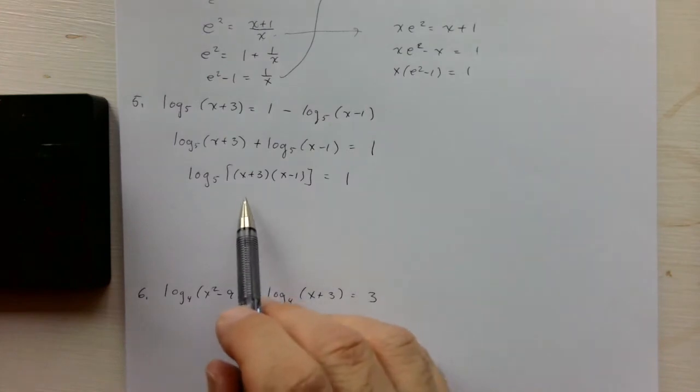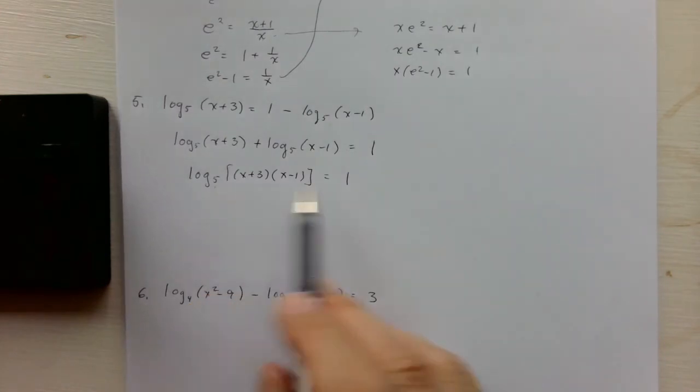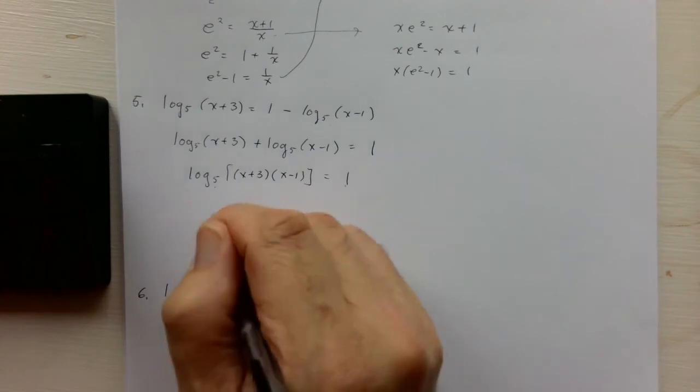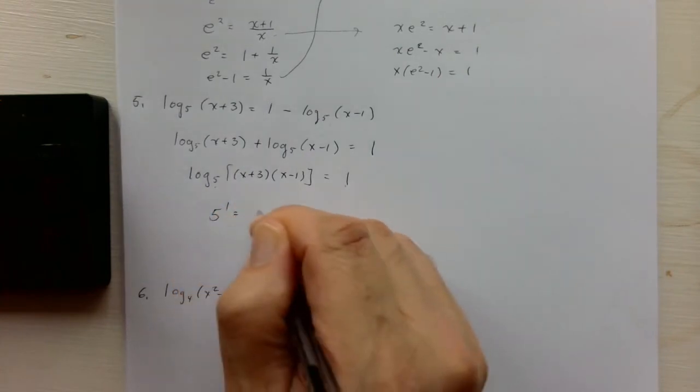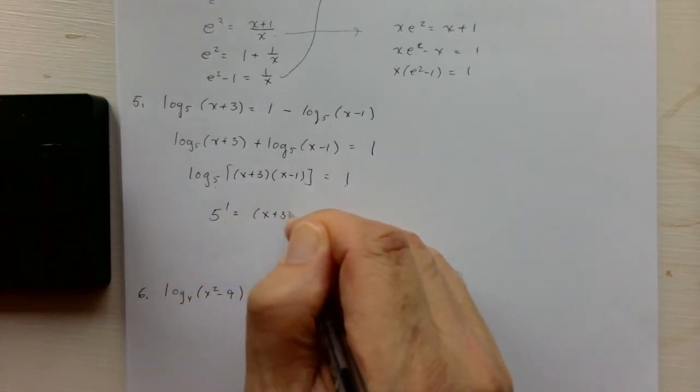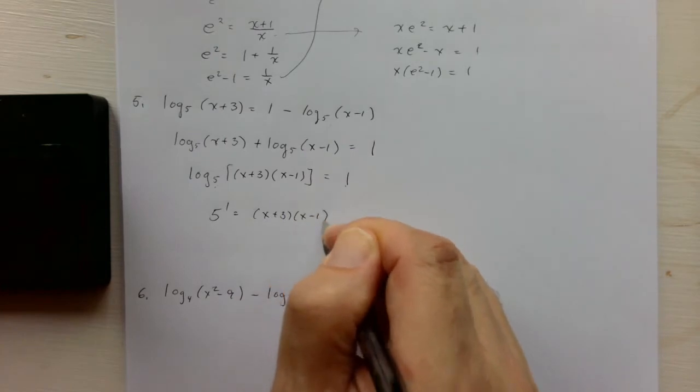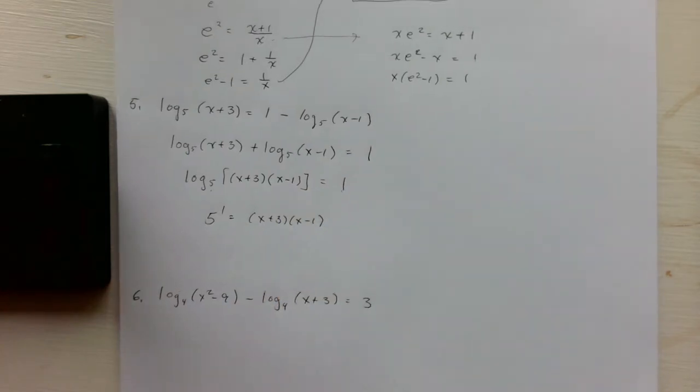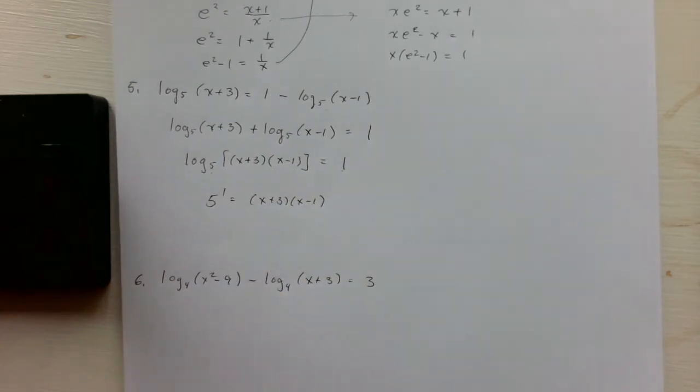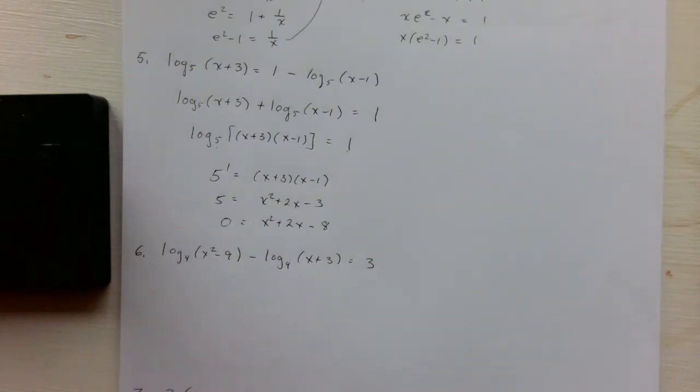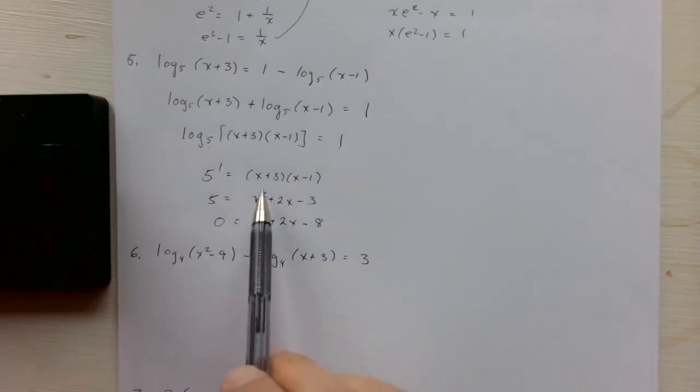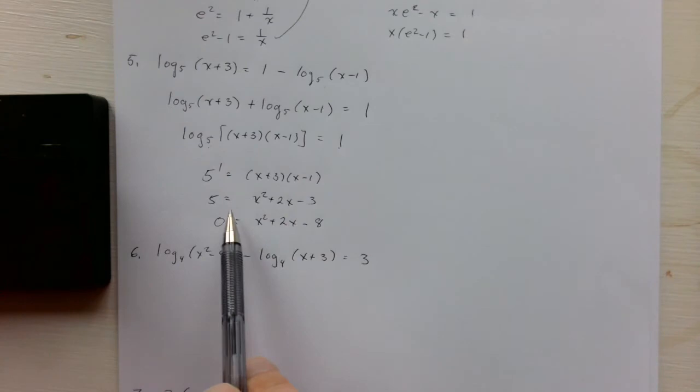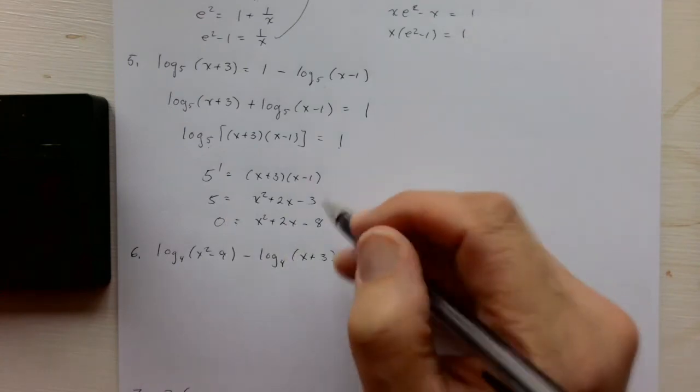And then we say, okay, 5 is our base, so 5 to the first is equal to this product. And I will pause, I'll let you figure this out. Okay, so hopefully you multiply this out correctly. You get x squared plus 2x minus 3 equals 5. Subtract 5 from both sides.